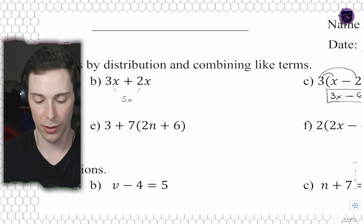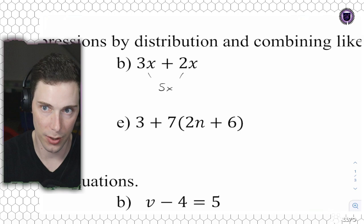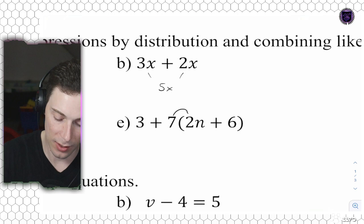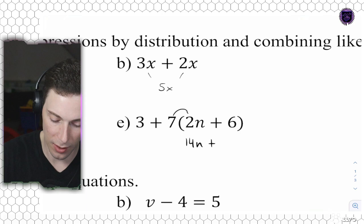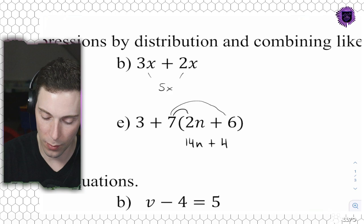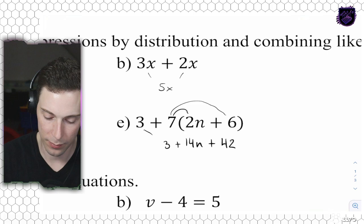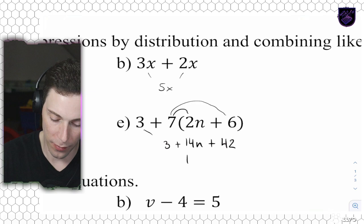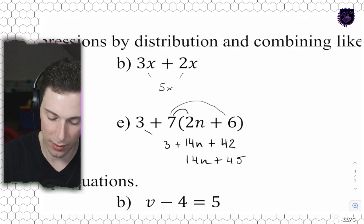Now the last two, if you're on assignment number three, you're going to need to combine like terms after distribution. So first we're going to go 7 times 2n, which is 14n, plus 7 times 6 which is 42. And then we're going to bring down our 3. The last step is we combine the 3 and the 42 - they are like terms - so we get 14n plus 45. That's going to be our final answer.